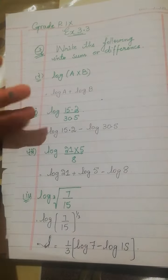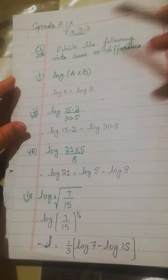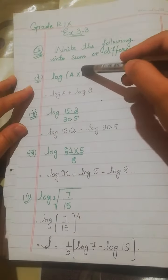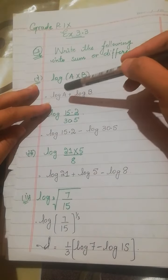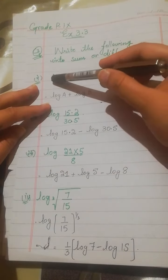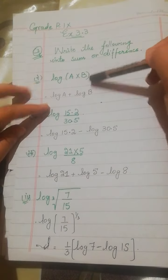Write the following into sum or differences. Now we will use some laws of log. For example, if you see the first question, log A multiplied by B. So remember, when log is applied to multiplication, it will change to plus. So this is log A plus log B.